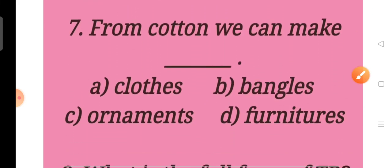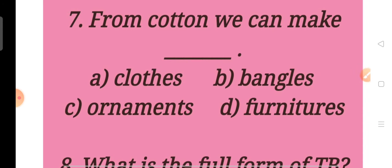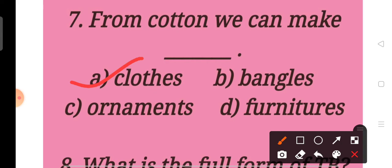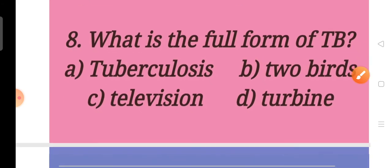Now move to next question, that is question number 7. From cotton we can make A. Clothes, B. Bangles, C. Ornaments, D. Furnitures. Children, answer will be A. Clothes. From cotton we can make clothes.